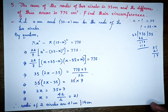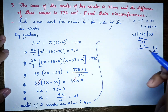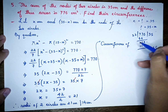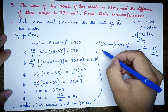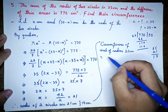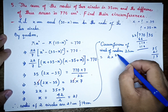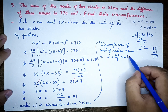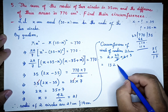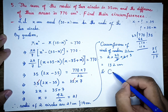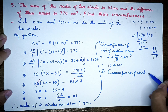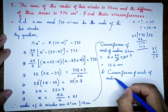Now for the circumference: the circumference of the circle with radius 21 cm is 2 pi r, which equals 2 times 22 by 7 times 21. Since 21 divided by 7 is 3, we get 2 times 22 times 3 equals 132 cm.